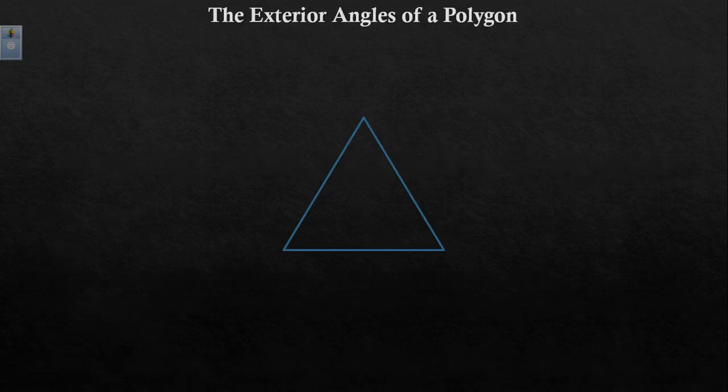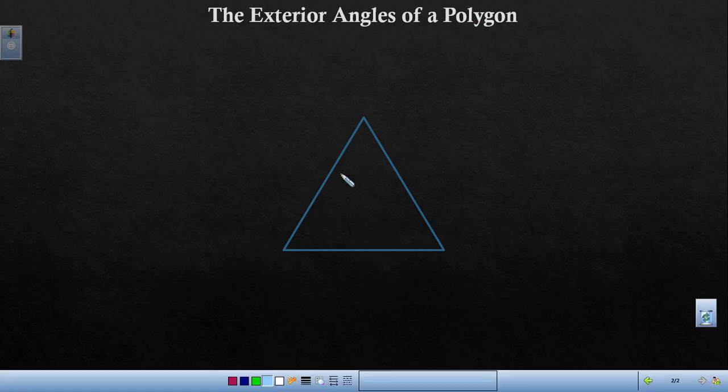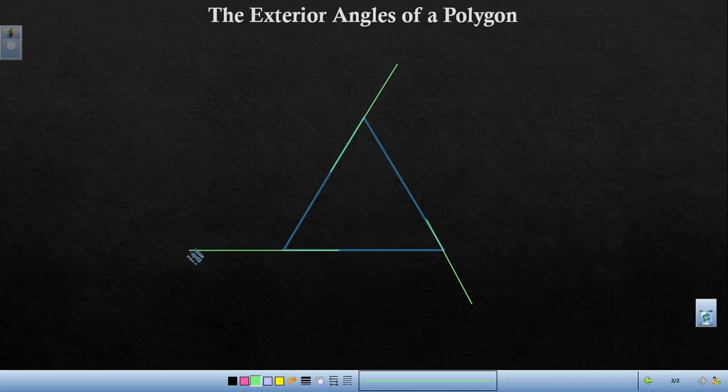Let's begin by discussing the exterior angles of a polygon. There are two ways to form exterior angles and one way is to extend all the sides clockwise. So that would be extending it off to the right as we move clockwise around the polygon. We can create three exterior angles.